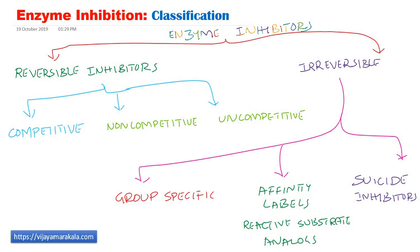To remember: enzyme inhibitors are broadly classified into reversible inhibitors and irreversible inhibitors. Reversible inhibitors are competitive, non-competitive, and uncompetitive. Irreversible inhibitors are group specific inhibitors, reactive substrate analogues or affinity labels, and mechanism-based inhibitors or suicide inhibitors. I am going to talk about these individual categories in future videos. This is the brief introductory video about enzyme inhibition. Thanks for watching.